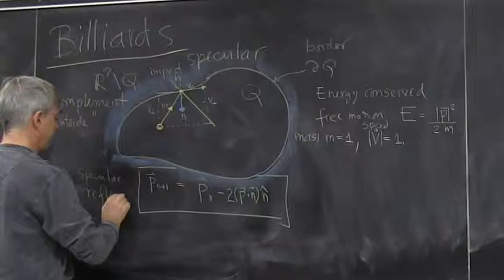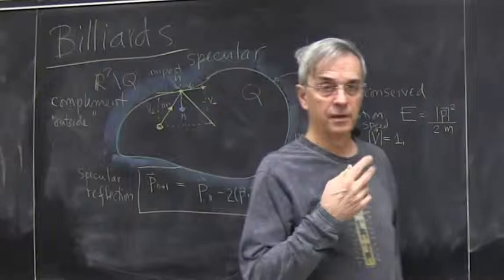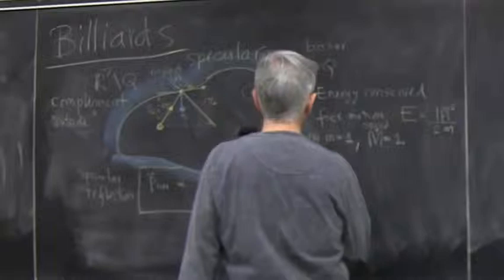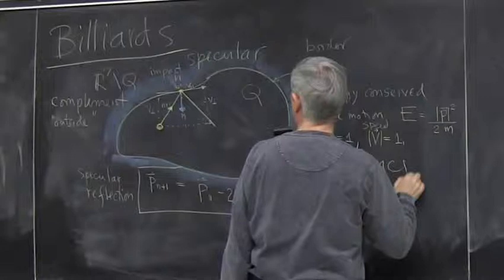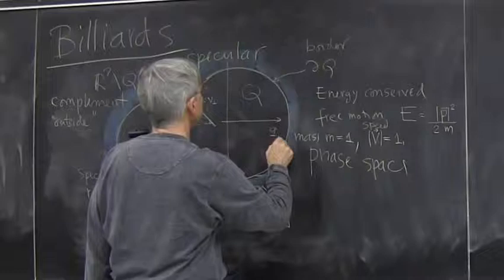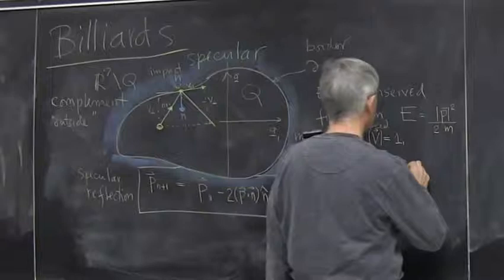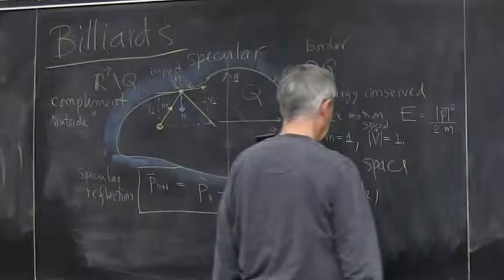Now the phase space of the system. So I'll use phase space for Hamiltonian systems and state space for more general systems. So phase space. In my coordinates, I'll have coordinate q1, q2, some place in this billiard.